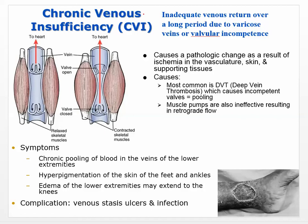Chronic venous insufficiency is a blanket term meaning you're not getting adequate venous return over a long period of time. It can be because of varicose veins, veins that aren't working right, or valvular incompetence where the valves themselves aren't working. We have muscle pumps with one-way valves: as muscles contract, they squeeze the veins and because of the one-way valves, blood is forced upward. This is how venous blood returns to the heart, especially in the legs.